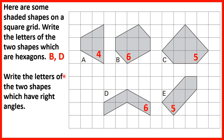Now write the letters of the two shapes which have right angles. Remember a right angle is a 90 degree angle, and that's the same size as the corner of a piece of paper or the corner of this screen. Now A doesn't have any angles that look like they might be right angles — we've got two obtuse angles and two acute angles.